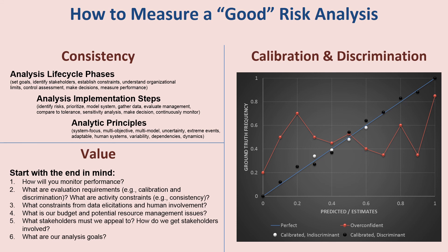So how do you do this? You should start with the end in mind. What are you going to measure in terms of the performance of the risk assessment? How will you evaluate requirements? To what extent is calibration and discrimination important? To what extent do you need to comply or be consistent with certain analytic processes, implementation steps, or principles? What constraints do you have from data elicitations or human involvement? What's your budget? What stakeholders do you need to appeal to, and how do you get them involved? From that, you can derive your analysis goals to achieve the greatest value in your risk assessment.